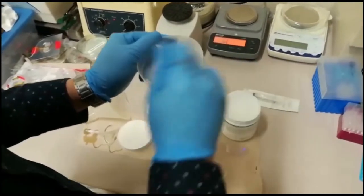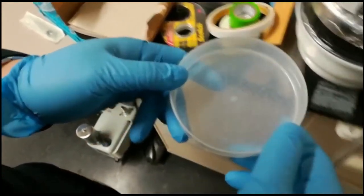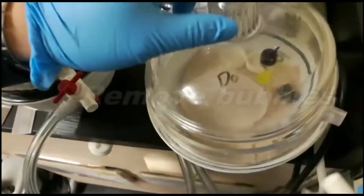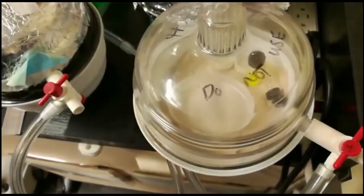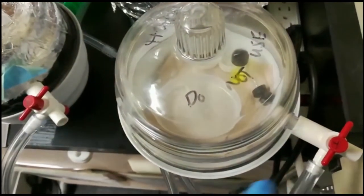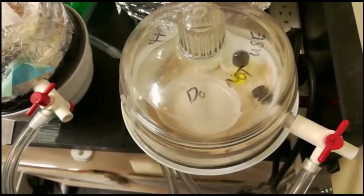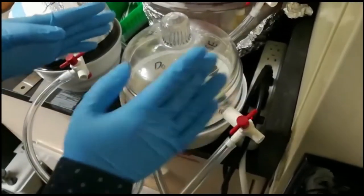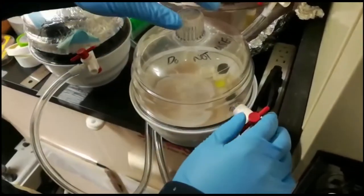After mixing the PDMS and curing agent, we put it in the vacuum chamber to get rid of the bubbles. We let this mixed solution in the vacuum chamber for half an hour. After half an hour, the bubbles in this solution have almost disappeared, so we can take it out now.